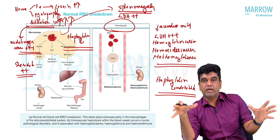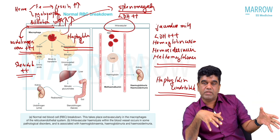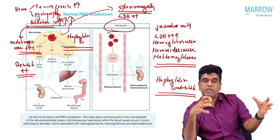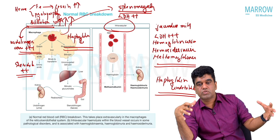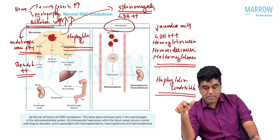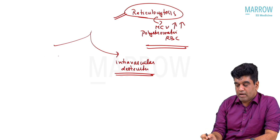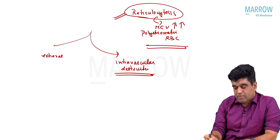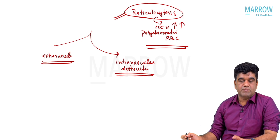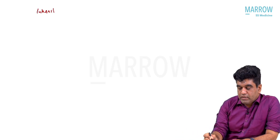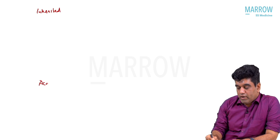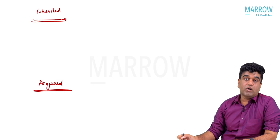What happens in extravascular hemolysis and what happens in intravascular hemolysis is now clear. There are conditions where there is both intravascular and extravascular hemolysis. Once we know what happens, let us put up a classification. The destruction can happen intravascularly or extravascularly. One way to classify hemolysis is inherited causes of hemolytic anemia versus acquired causes of hemolytic anemia.